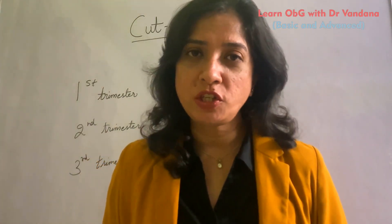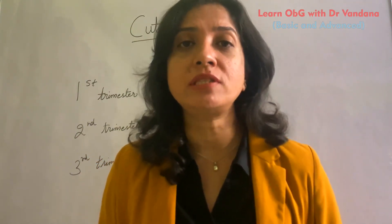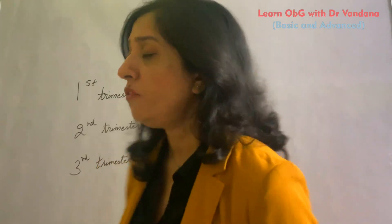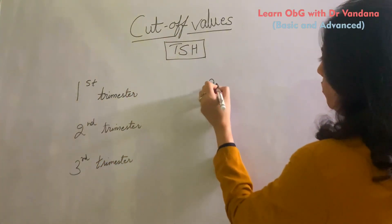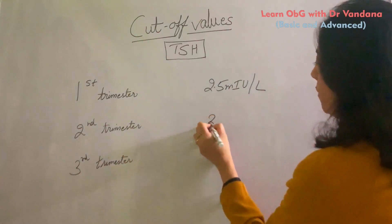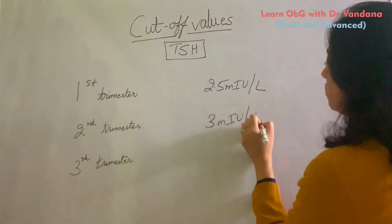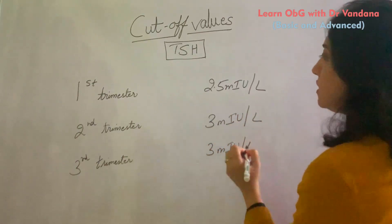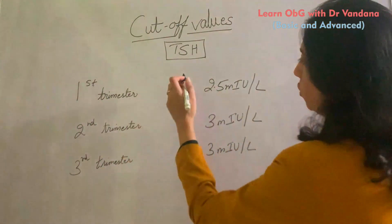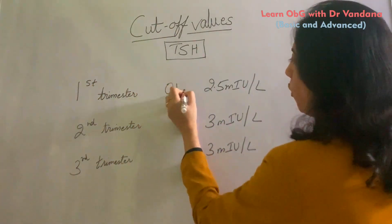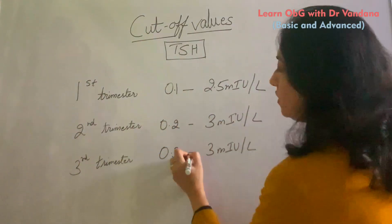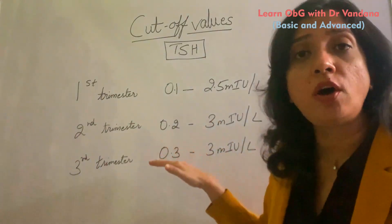Having understood the normal physiology of TSH in pregnancy, the diagnosis of hypothyroidism depends on TSH levels, so the cut-off values are important to remember. In the first trimester, the upper cut-off for TSH in a pregnant woman is 2.5 milli-international units per litre. In both the second and third trimester, the upper cut-off is 3 milli-international units per litre. The normal ranges are: first trimester 1–2.5, second trimester 0.2–3, and third trimester 0.3–3 milli-international units per litre.